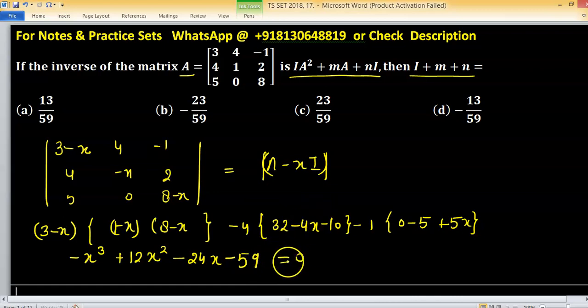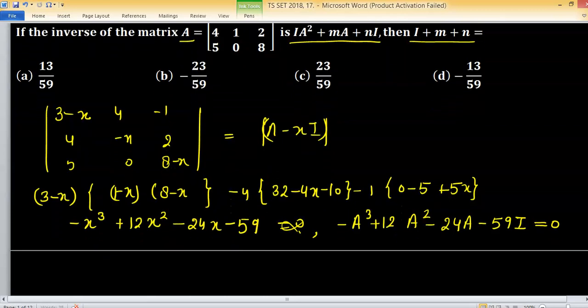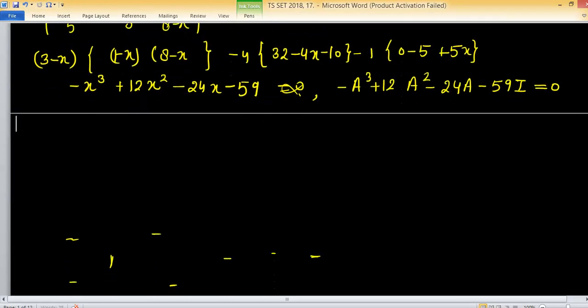Now apply Cayley-Hamilton theorem. Every matrix satisfies its characteristic equation. So, minus A cube plus 12A square minus 24A minus 59I equals 0, because the matrix satisfies its characteristic equation.